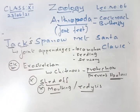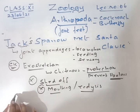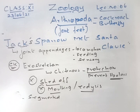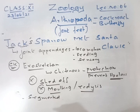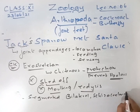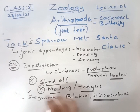The two S's stand for several features: the body is segmented. In earthworm (Annelida) every segment is similar, but here the body is distinguished into head, thorax, and abdomen. The second S is for bilateral symmetry. Also, they are schizocoelom animals.